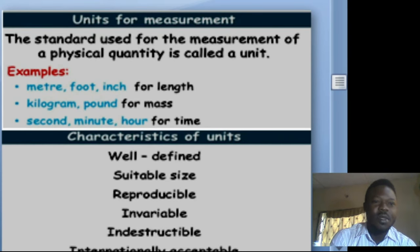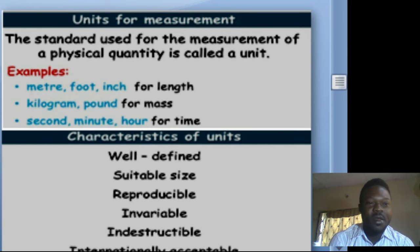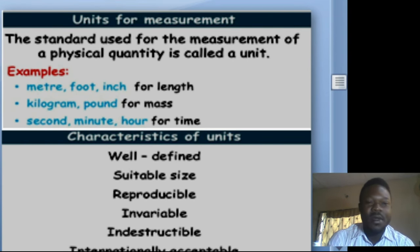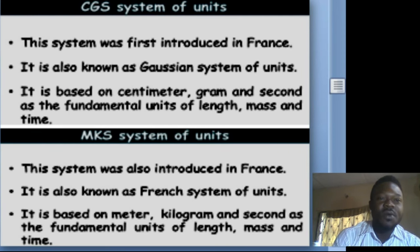The standard used for measurement of a physical quantity is called a unit. We already know that meter, foot, and inches are used for length; kilogram and pound for mass; seconds, minutes, hours, days, and years for time. The characteristics of a good unit: it must be well-defined, suitable in size, reproducible, invariable, indestructible, and internationally accepted.